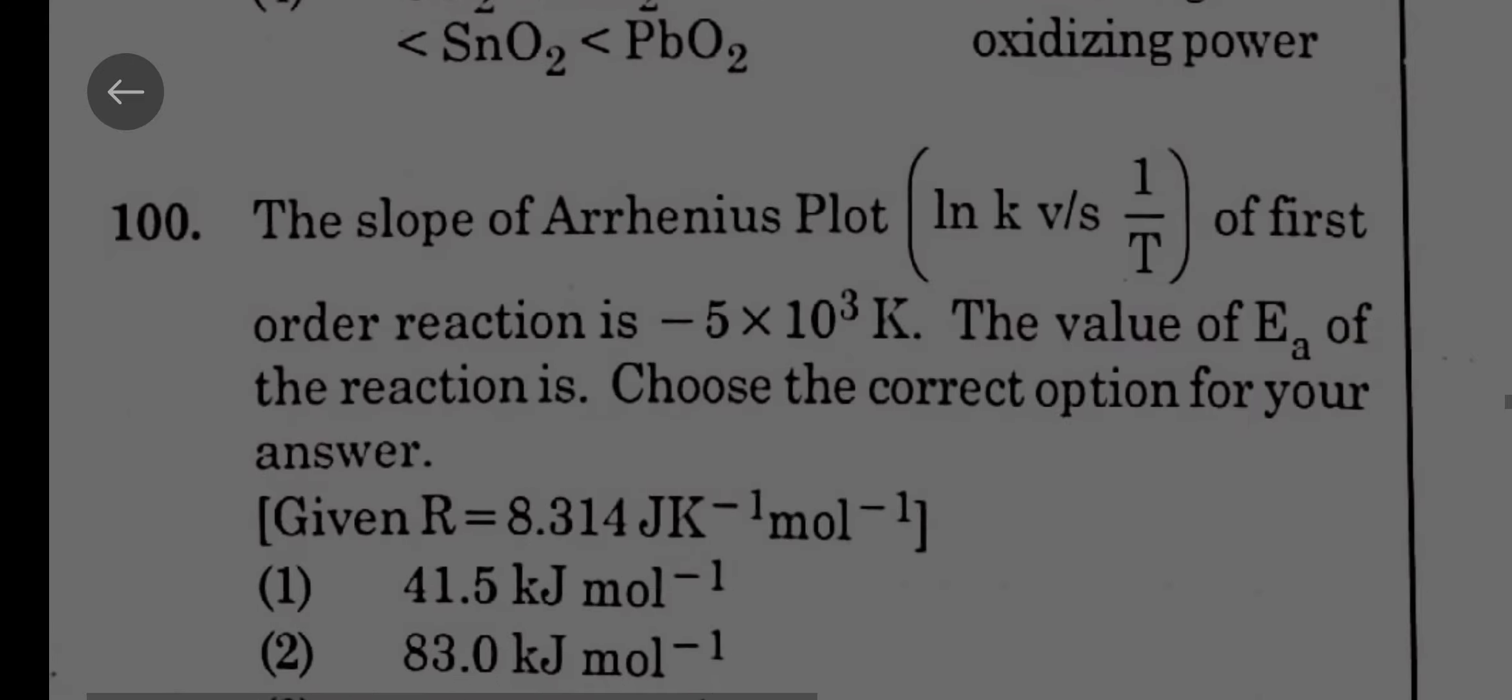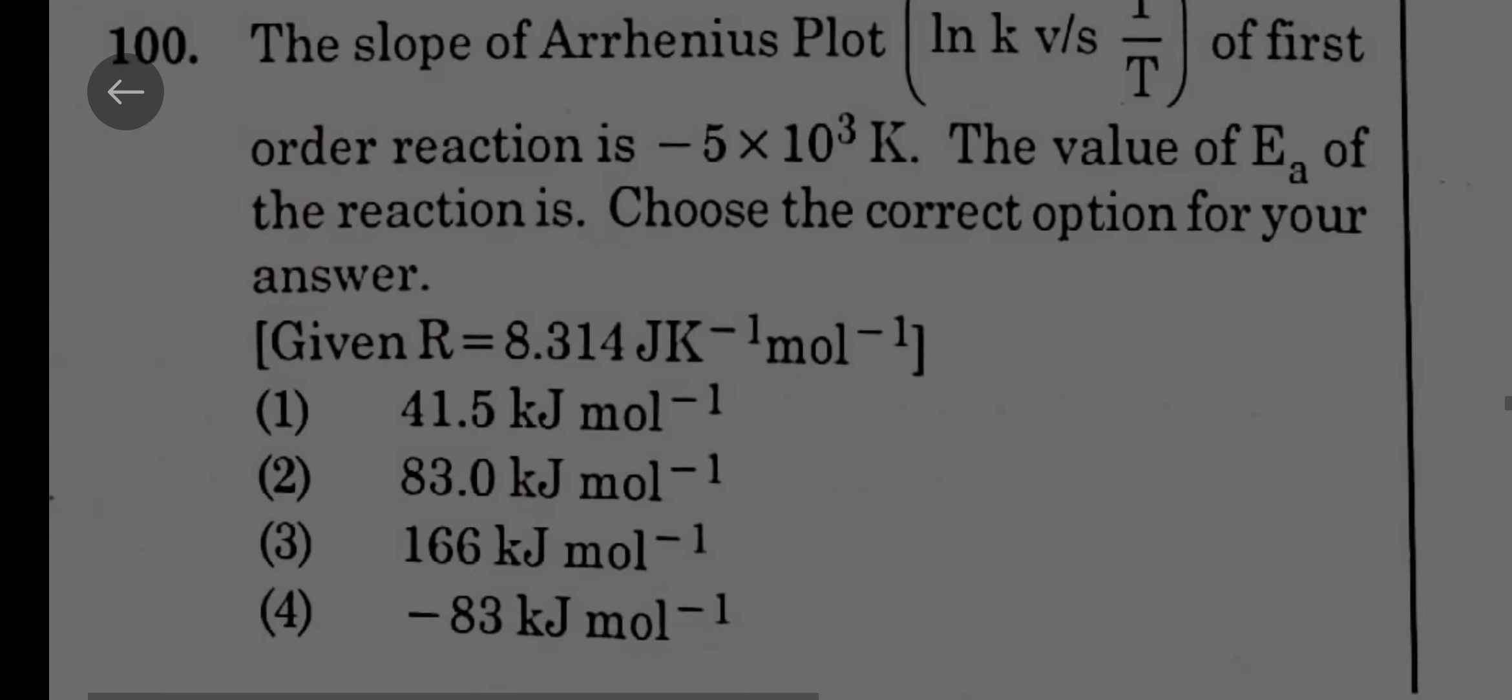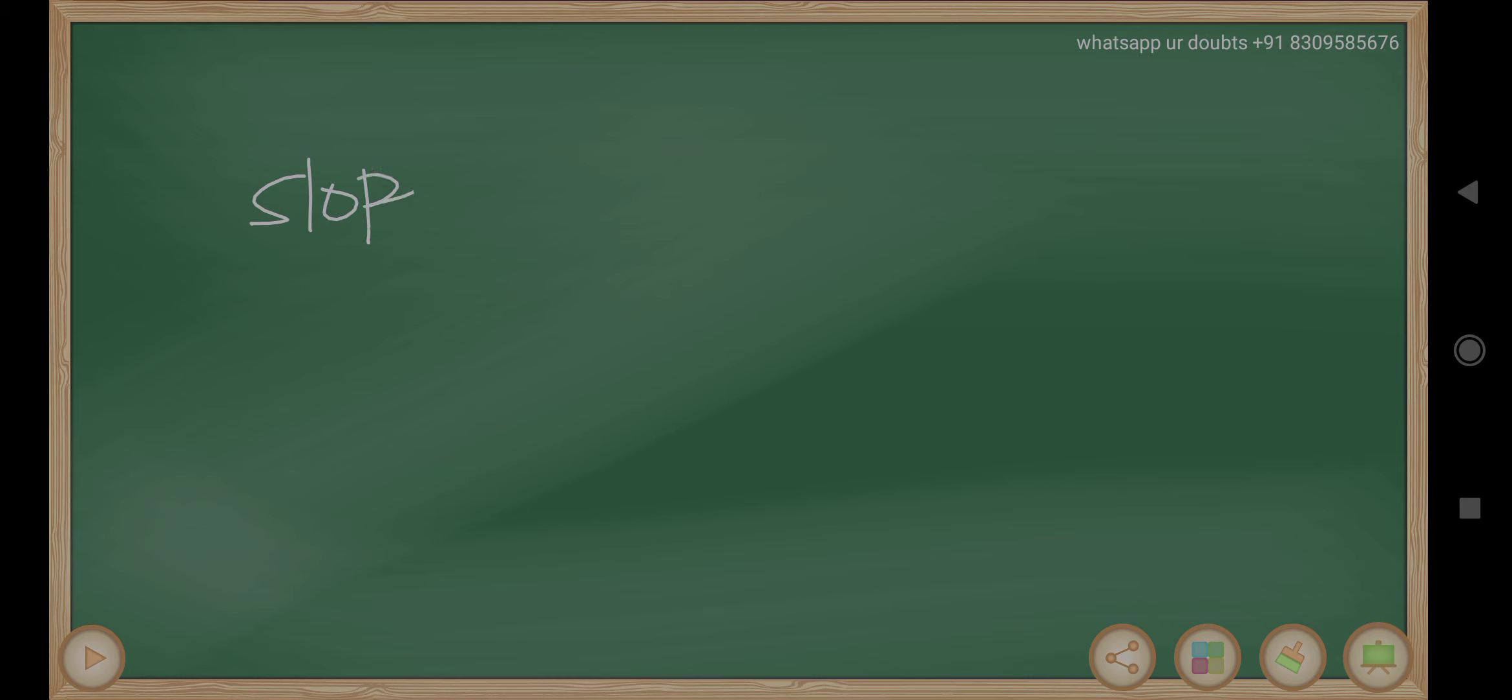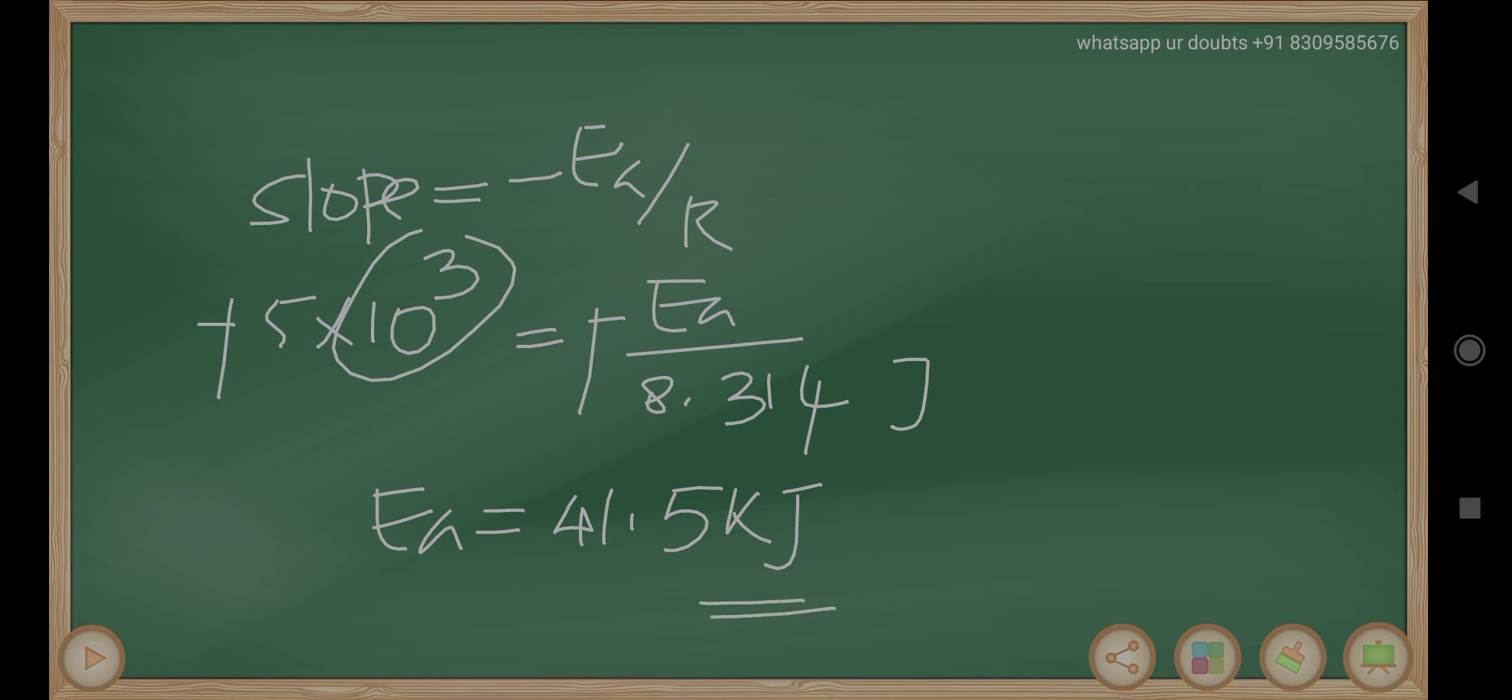The slope of Arrhenius plot, ln K versus 1 by T, of first order reaction is minus 5 into 10 to the power of 3. Then choose the right option. So the formula is very simple: slope is minus Ea by R. Slope is given minus 5 into 10 to the power of 3 equals minus Ea by R. R value given 8.314 joules. So minus minus cancel, Ea equals 41.5 kilojoules. It is joules here, 10 to the power of 3 is there, so that can convert into kilojoules.